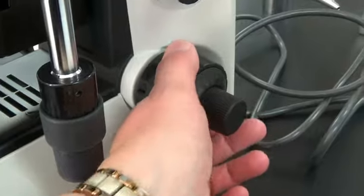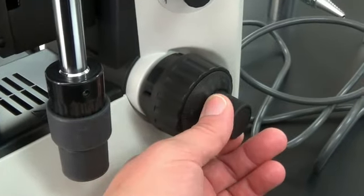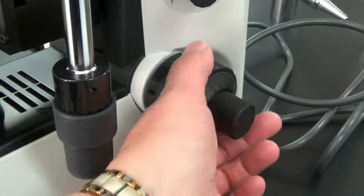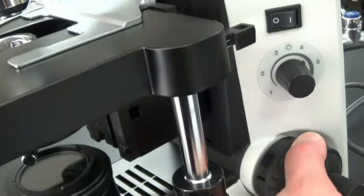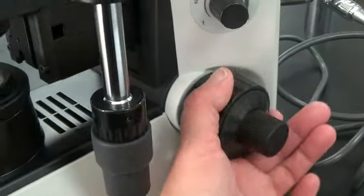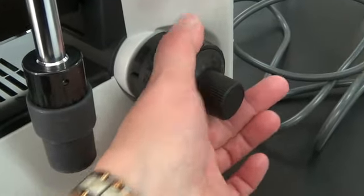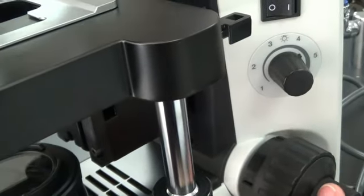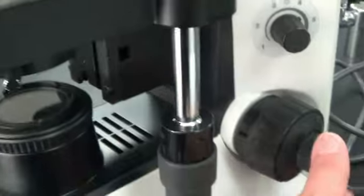Coarse adjustment knob. Fine adjustment knob. This is to raise and lower the stage. Coarse adjustment. Fine adjustment. Can't even see how that moves. It's so fine.